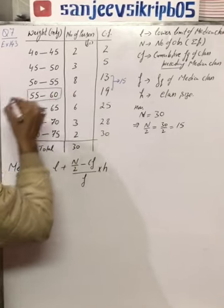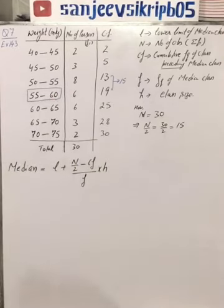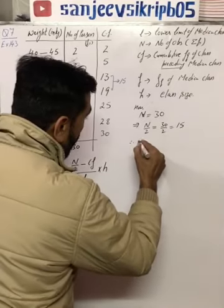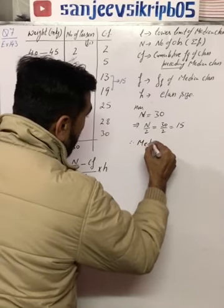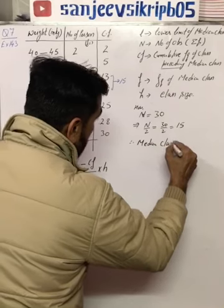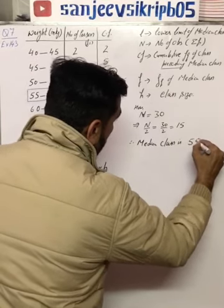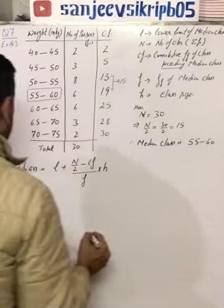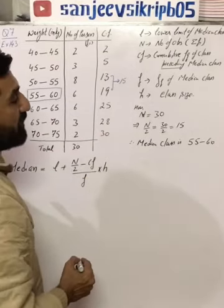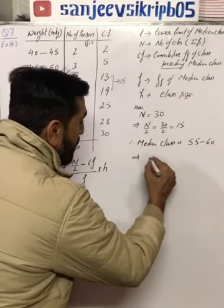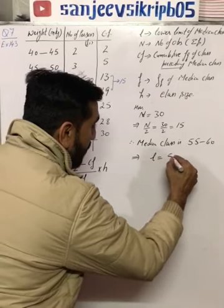55 to 60. So we write here: therefore, median class is 55 to 60. If median class is 55 to 60, it means lower limit will be 55.